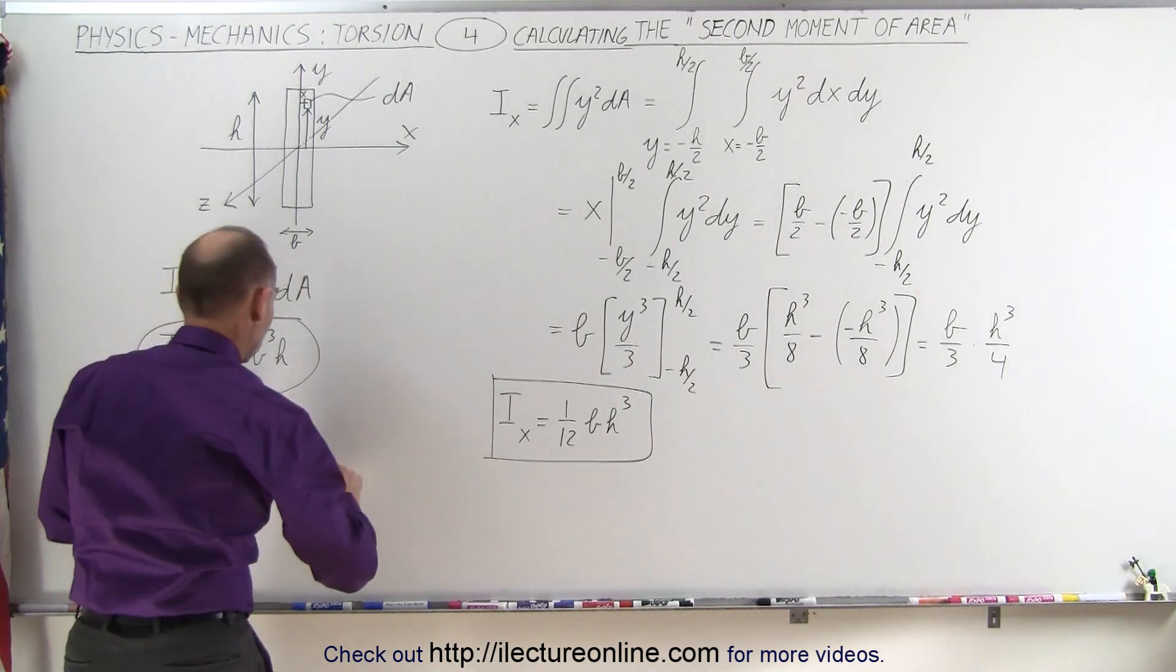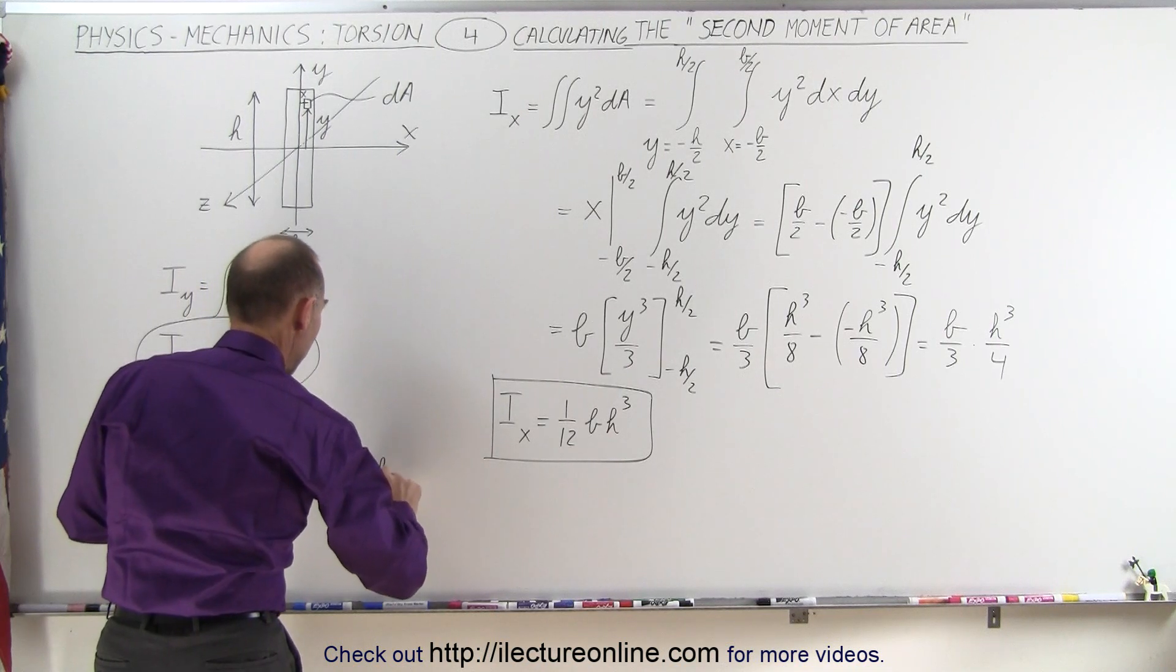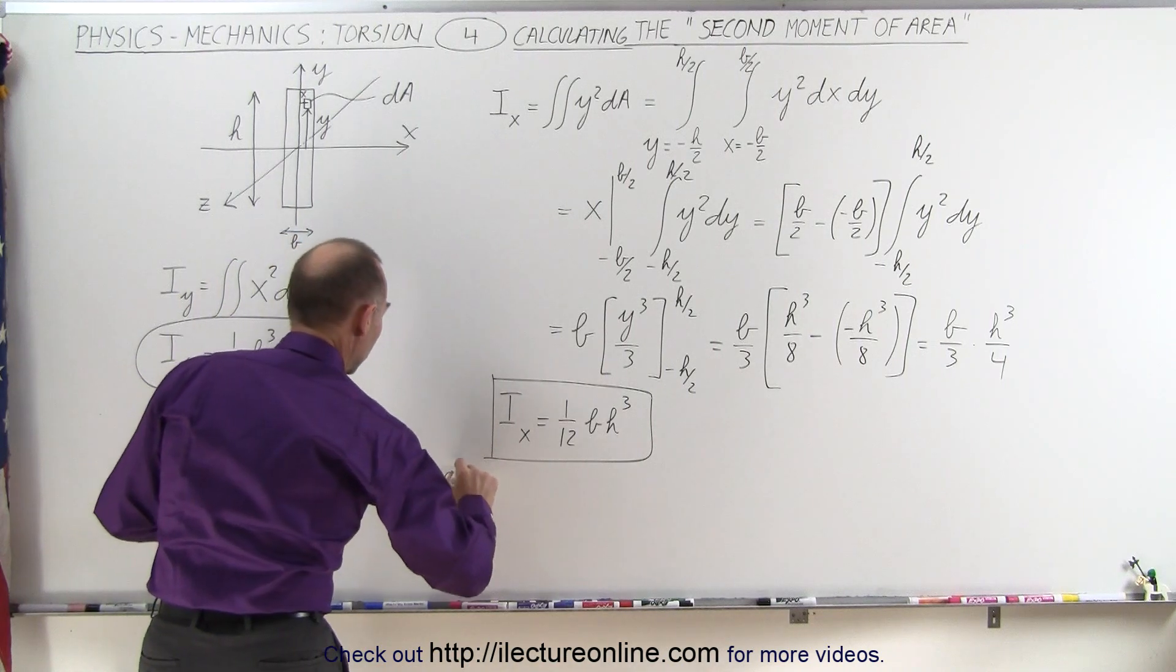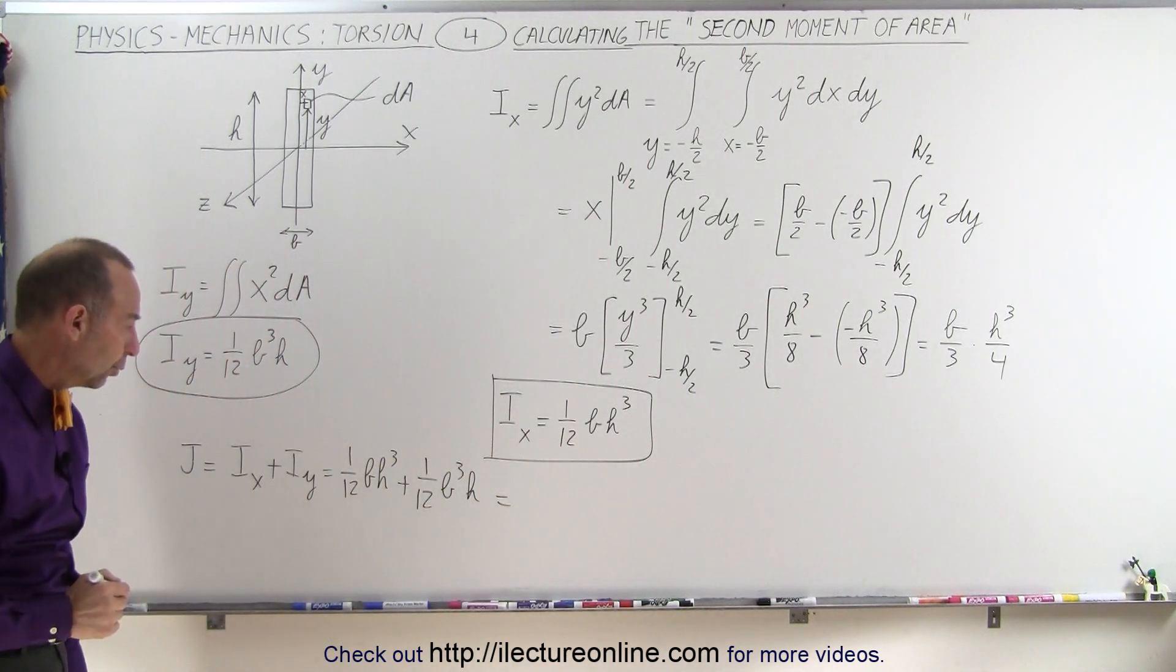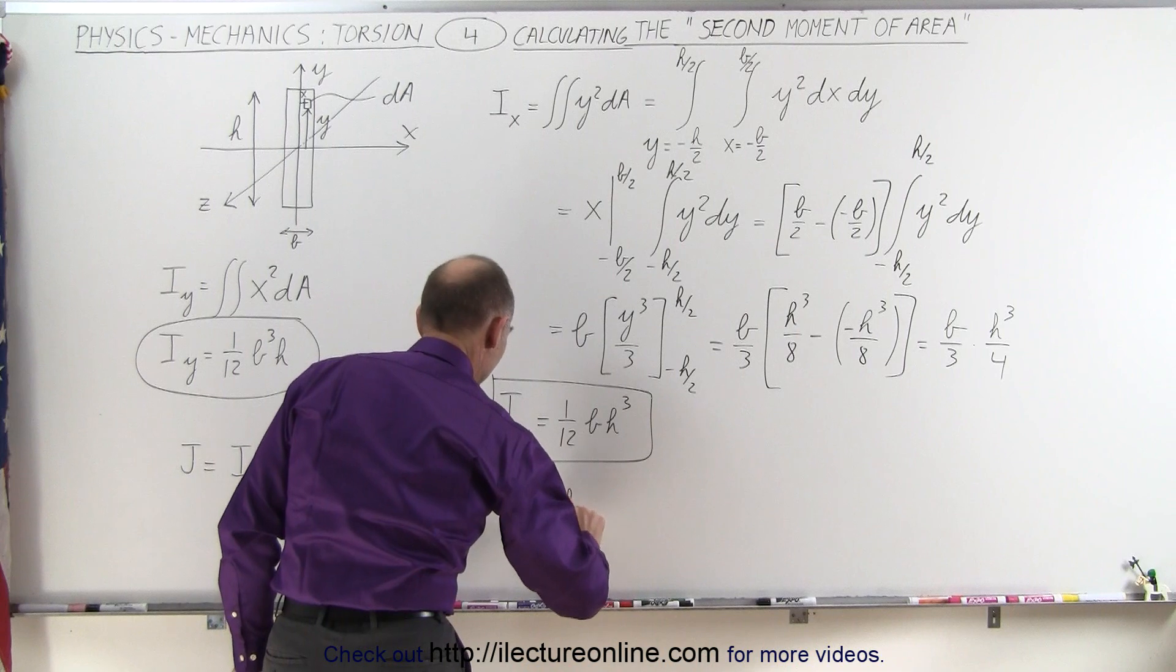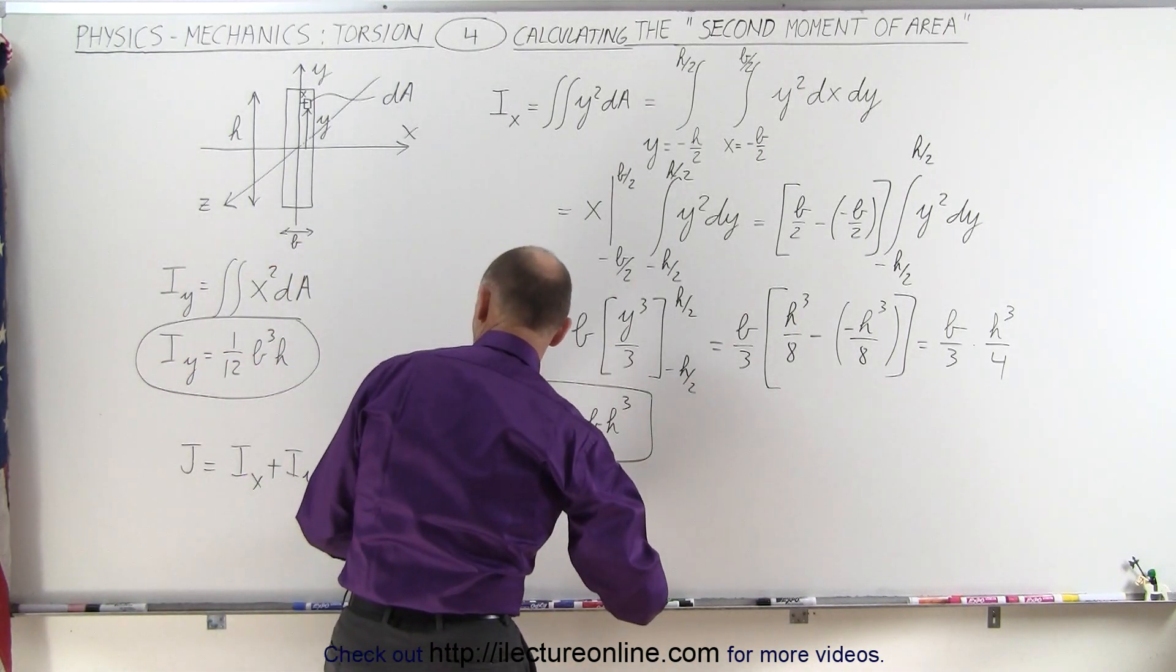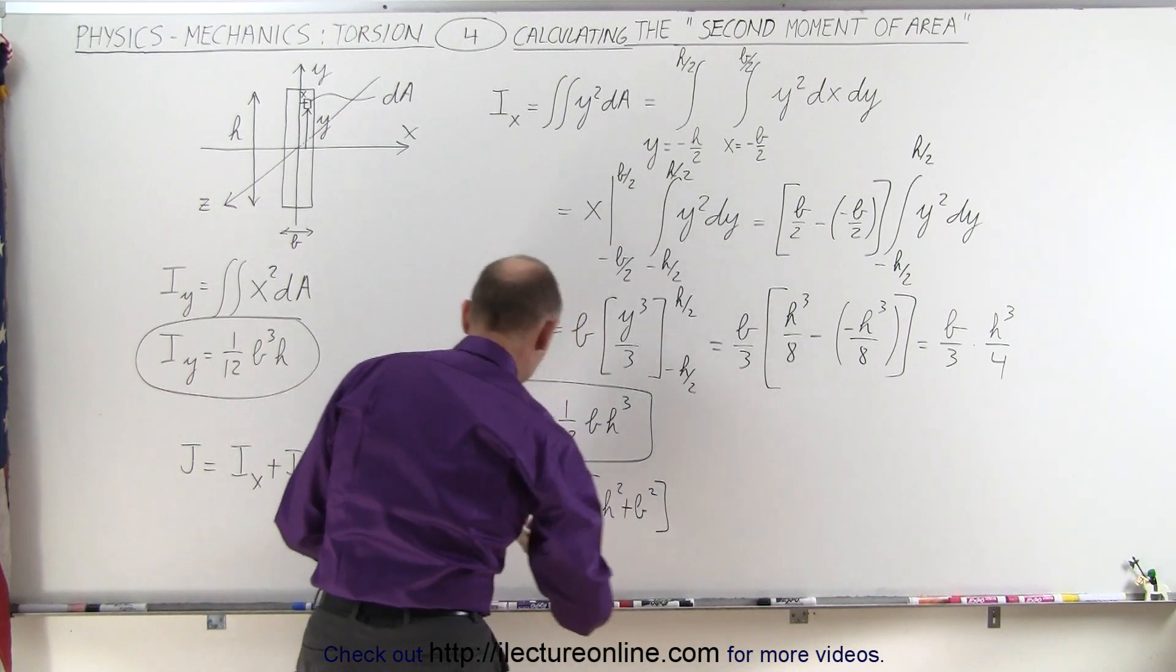So we'll plug that in. So this will be equal to 1 twelfth b h-cubed plus 1 twelfth b-cubed h, and of course, when we factor out the common terms, we can say that's equal to 1 twelfth b times h. And then what we have left is we have an h-squared plus b-squared, like that.